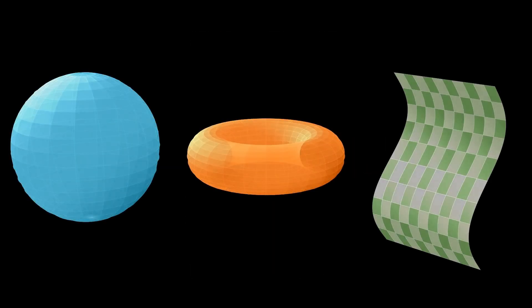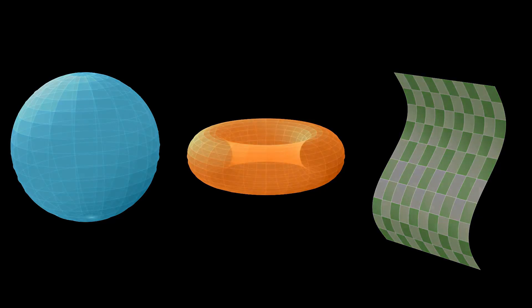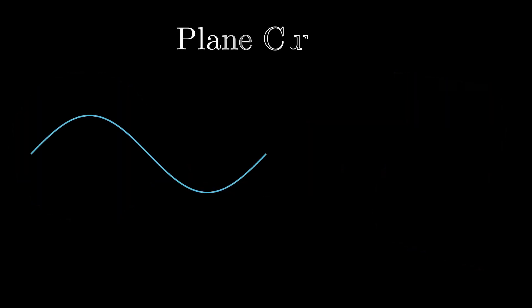So why are we able to detect curvature in the first two cases but not the third? And what is the connection between triangle angles and curvature? Before answering these questions, let's first look at the simplest kind of curvature: the curvature of plane curves.